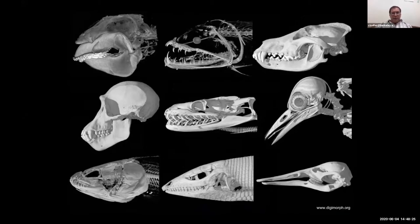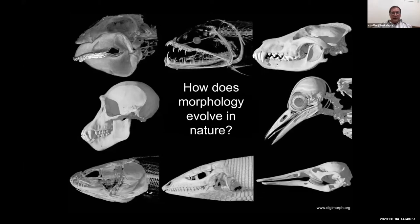As these nine vertebrate skulls make the point, there are both conserved aspects of morphology — for instance, they all have bone and upper and lower jaws — but also layered on top of that, all kinds of interesting differences in the head, most of which relate to what these organisms are eating. You can see pretty wild variation in jaw size, presence or absence of teeth, and number and size of different bones in the skeleton.